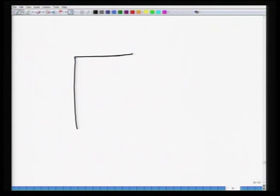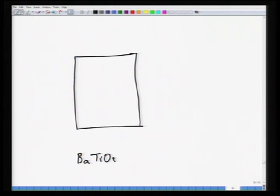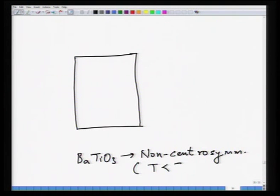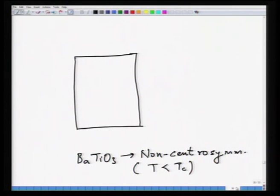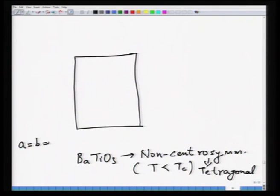When the material becomes non-centrosymmetric, BaTiO₃ becomes tetragonal, which happens at temperature T less than Tc. In the tetragonal form, a = b ≠ c, and α = β = γ = 90°. Drawing the tetragonal unit cell: barium atoms sit at corners, oxygen at face centers, and titanium in the middle.